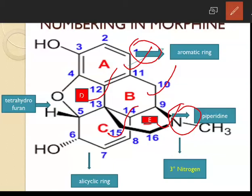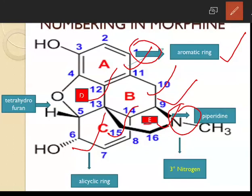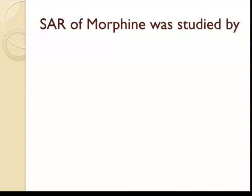The ring structure of morphine: Ring A is an aromatic ring, Ring B is a cyclohexene ring (alicyclic ring), Ring C is an alcoholic ring, Ring D is the tetrahydrofuran ring, and Ring E is the piperidine ring.